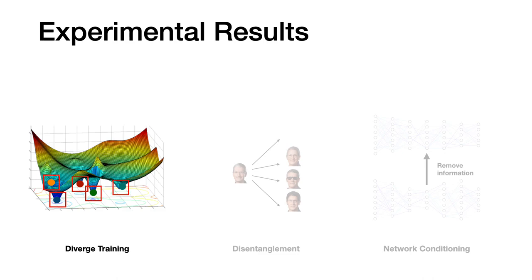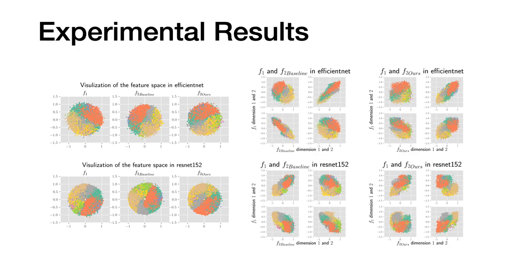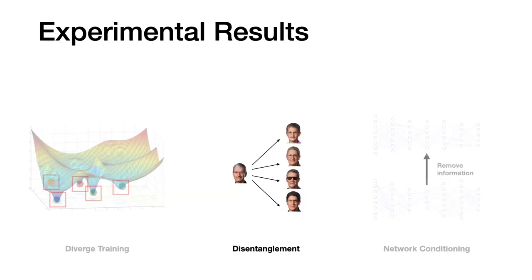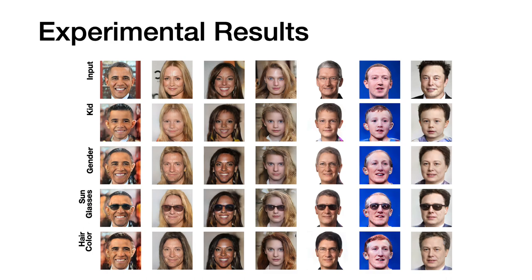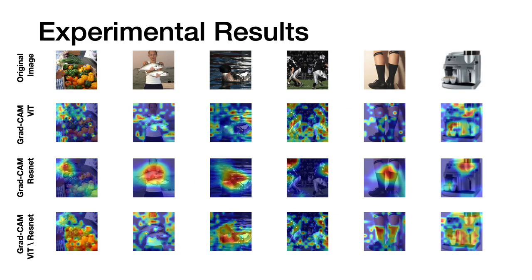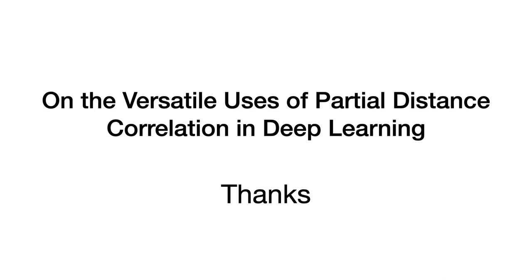In the main paper, we study in detail these use cases in our experiments. For the diverge training, we show that our method can train more independent networks. For disentanglement, our method shows the ability to change several attributes of interest like age and gender using semi-supervised labeling. Finally, for network conditioning, we show that by removing ResNet from ViT, we can still learn meaningful results with respect to the heatmap using GradCam. Thanks for reading the paper and viewing this video.